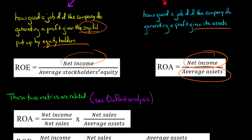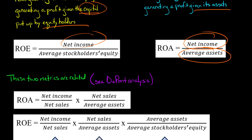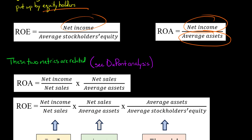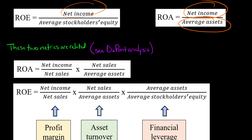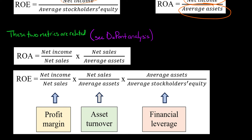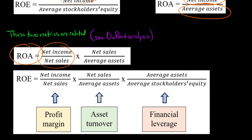ROA and ROE are actually related concepts, and we can see this when we do DuPont analysis and disaggregate ROA and ROE into their various components. ROA is the product of a company's profit margin and its asset turnover.